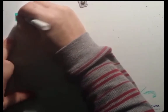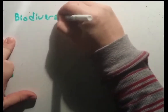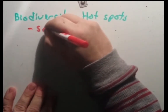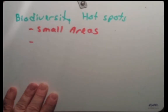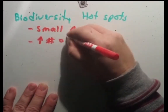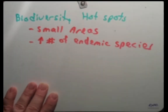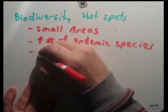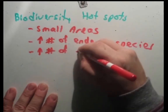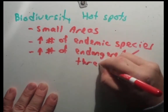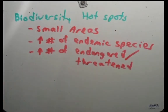The next thing we want to talk about are biodiversity hotspots. Biodiversity hotspots are typically small areas that have a high number of what we call endemic species. Endemic species are species found in that area but nowhere else on Earth. We'll also find a high number of endangered or threatened species in these hotspots.